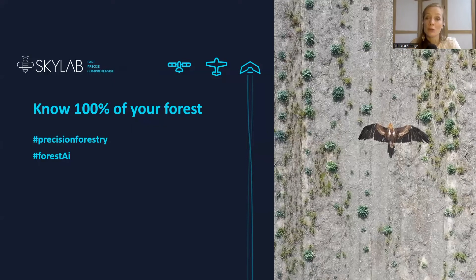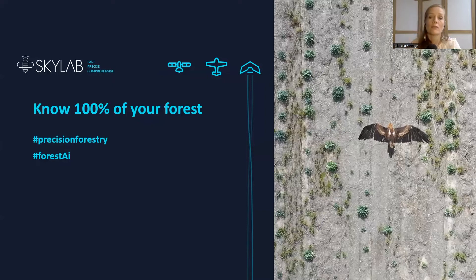Skylab is a technology company based in Hamburg, Germany, and we work with forest companies all over the world using AI and machine learning to analyze aerial forestry data, which could be from drones, planes or satellites, to allow you to see 100% of your forest. Our main goal is to give foresters a comprehensive picture of what's happening in their stands, which leads to savings in time and cost and ultimately increased productivity of those stands.